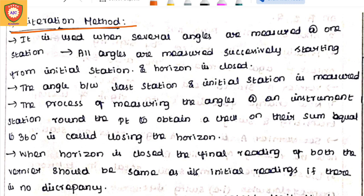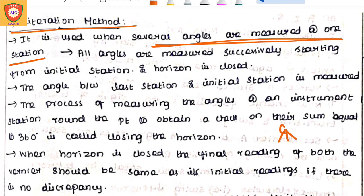We can measure the horizontal angle at one station. This is the Reiteration Method. We can measure the horizontal angle at one station and measure a number of angles. We can also measure the horizontal angle with reference to the vertical angle.